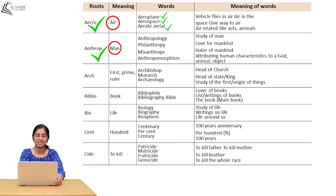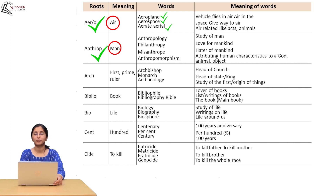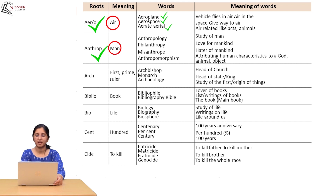Next root is 'arc', meaning first, prime, or ruler. So archbishop means head of the church — first in the church. Monarch means head of the state, king, ruler. Archaeology means the study of first or origin of things. Because in all these words, 'arc' is used, and 'arc' means first, prime, ruler — so the meaning of the whole word can be understood from the root word.